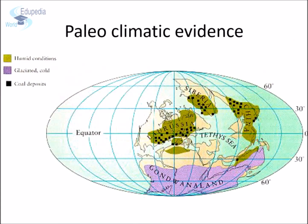Wegener also looked at evidences from paleoclimatic data. He used data from ancient glaciers — large glaciers are most commonly found in frigid climates, usually in the far northern and southern latitudes. Using the distribution of grooves and rock deposits left by ancient glaciers on many different continents, Wegener traced the glaciers back to where they must have started. He discovered that if the continents were in their current positions, the glaciers would not have formed in the middle of the ocean very close to the equator. Wegener also found evidences from warm climate zones, discovering ancient coal and coral reefs in parts of the continents that are much too cold today.